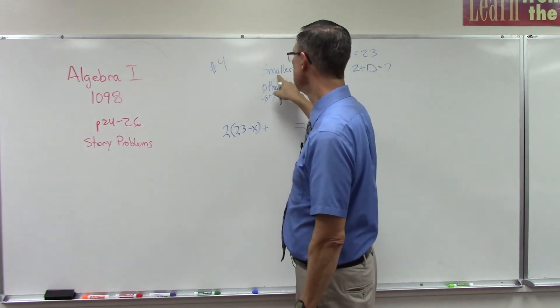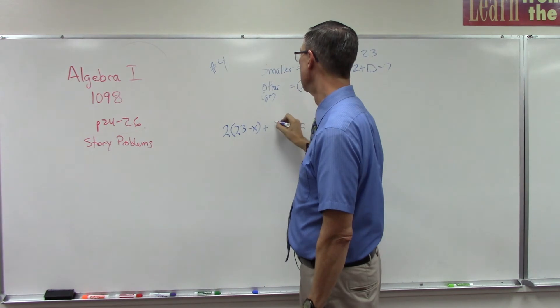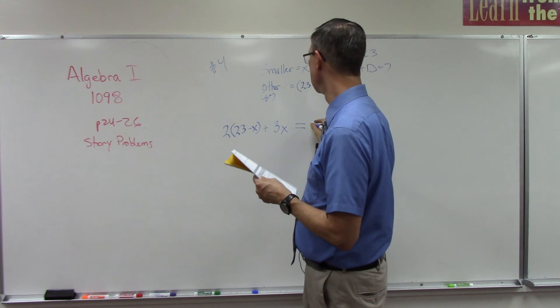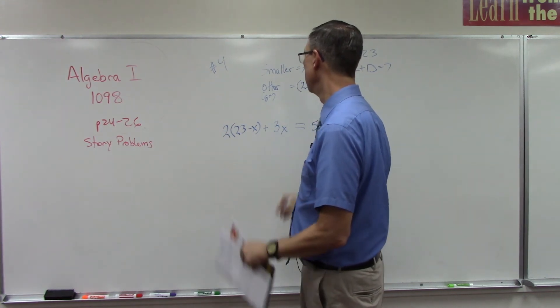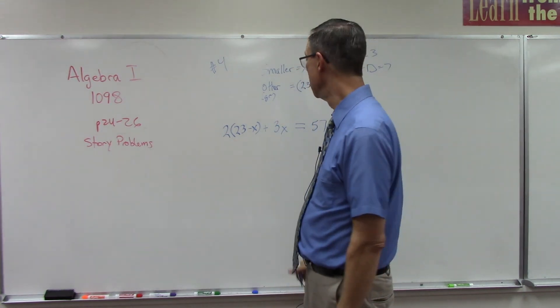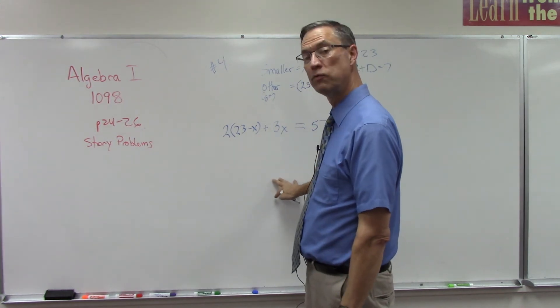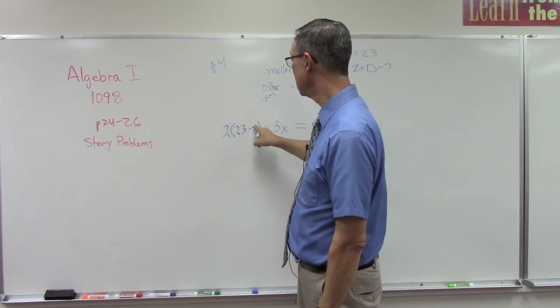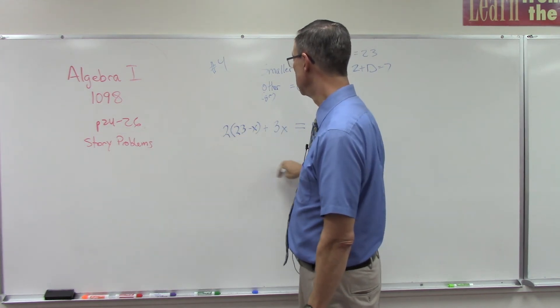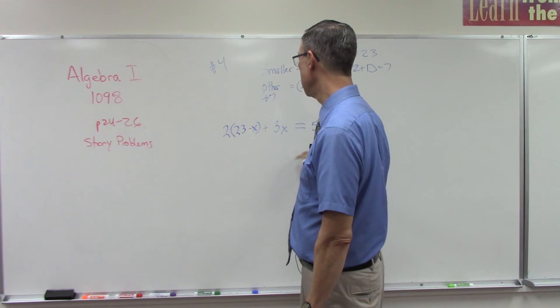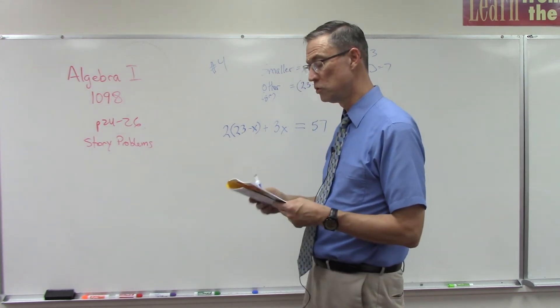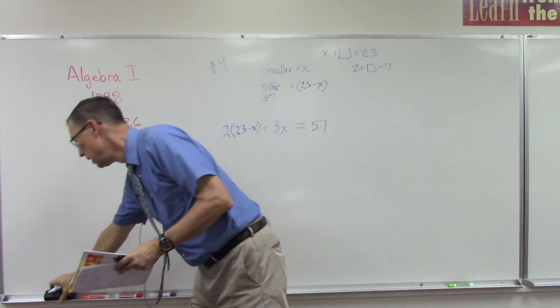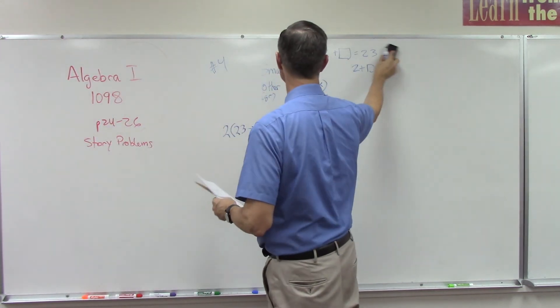Twice the greater number added to three times the smaller number, and then we're told that equals 57. So I'm not going to solve this for you. I think we've set it up far enough, so you just distribute this out, keep your x's together, put your x's together, subtract the number from the other side, and you should easily be able to solve that. The important thing though is to see the steps we went through in order to set it up. Let's just go a little ways on number 5.